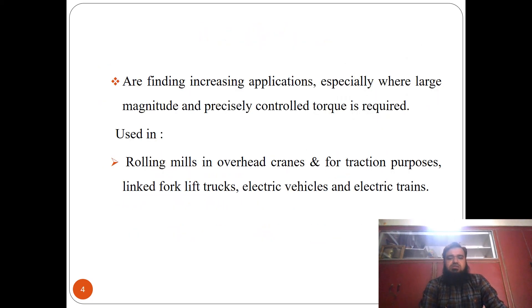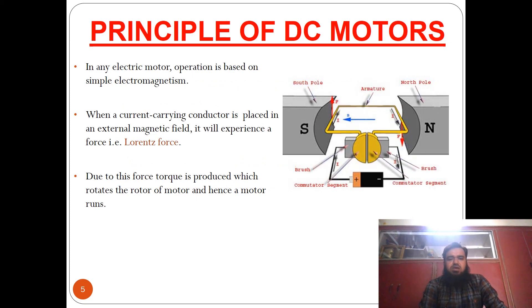They have a large number of applications, including railway traction and other purposes. The principle is based on electromagnetism and Lorentz force. When we have two magnetic poles and a conducting coil, we can produce a force on the coil.